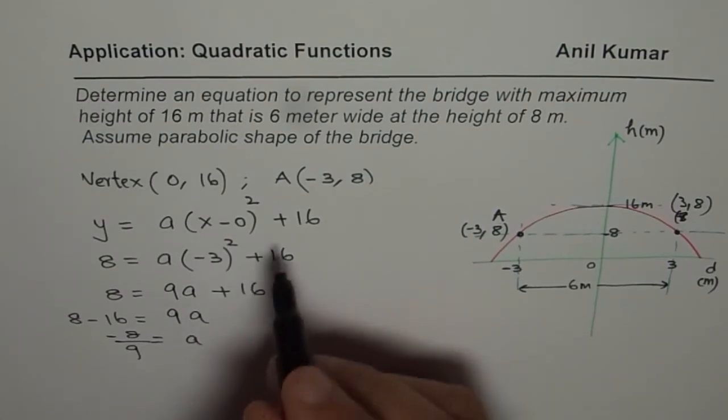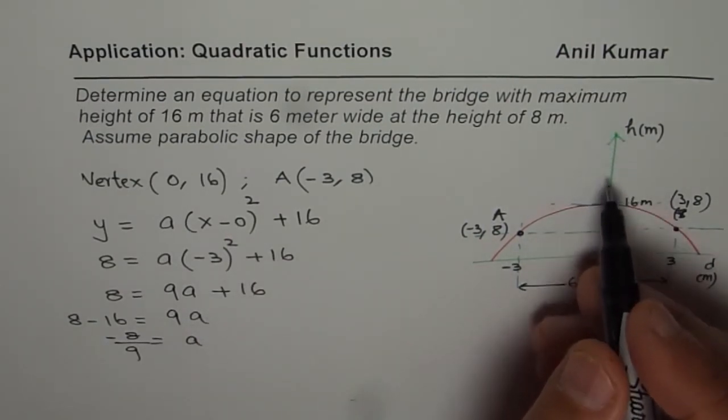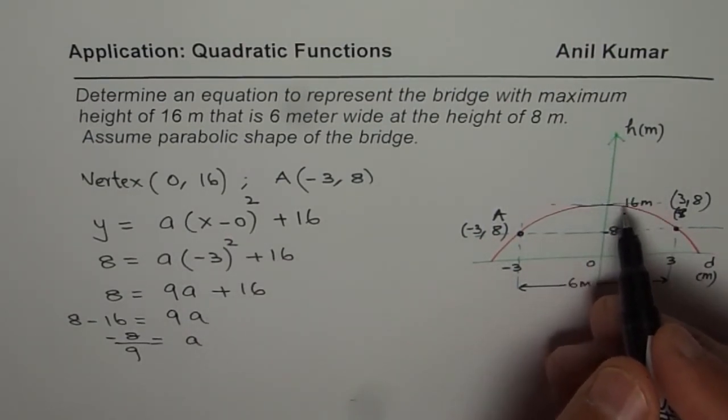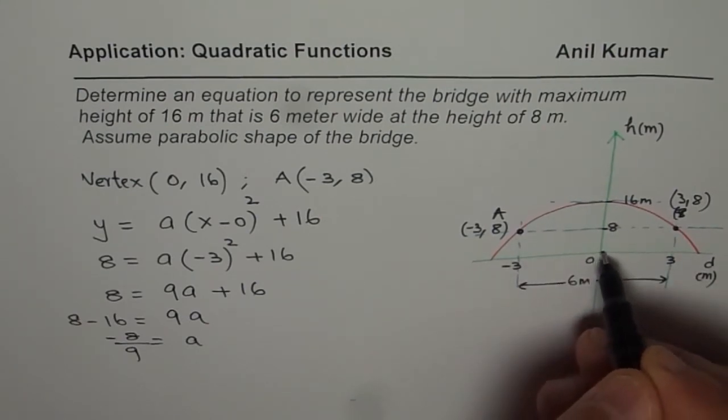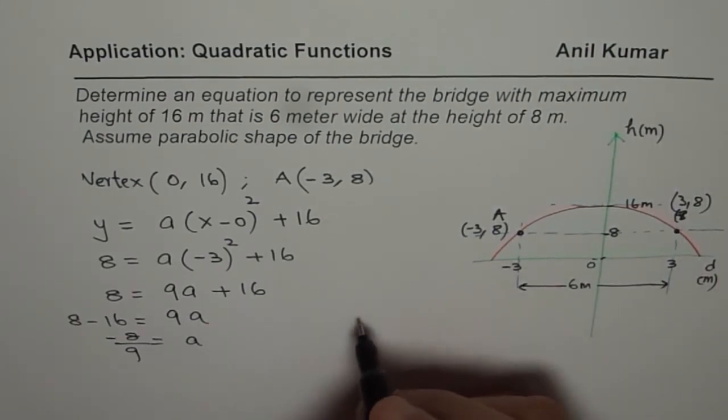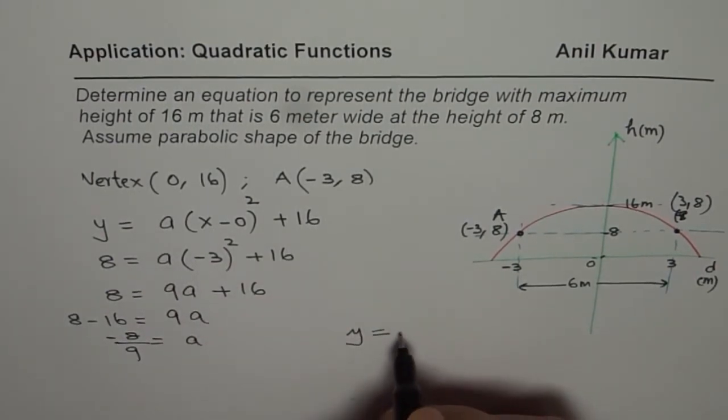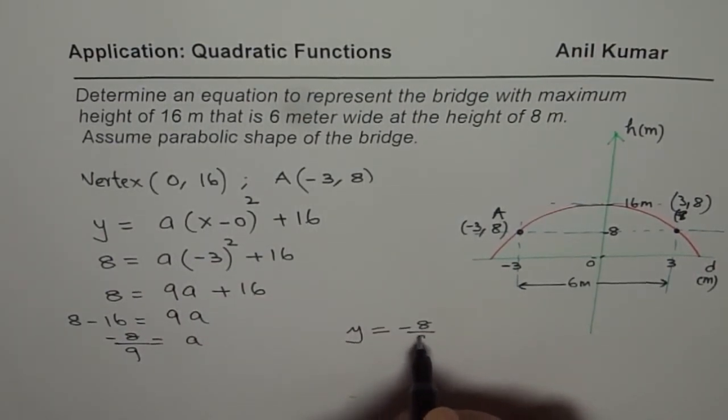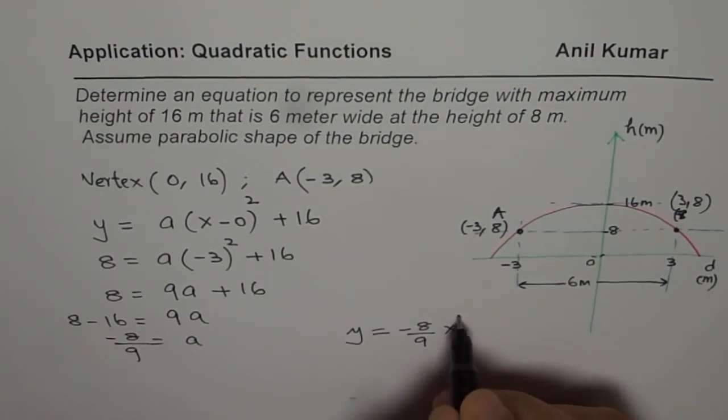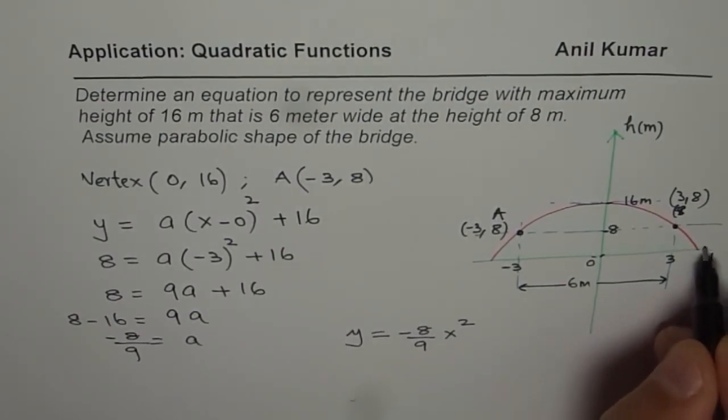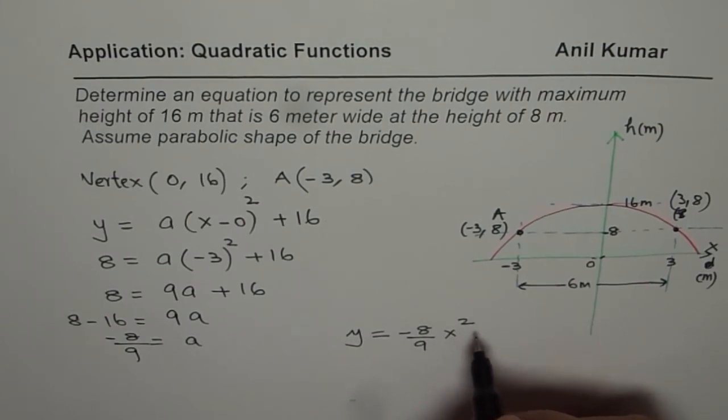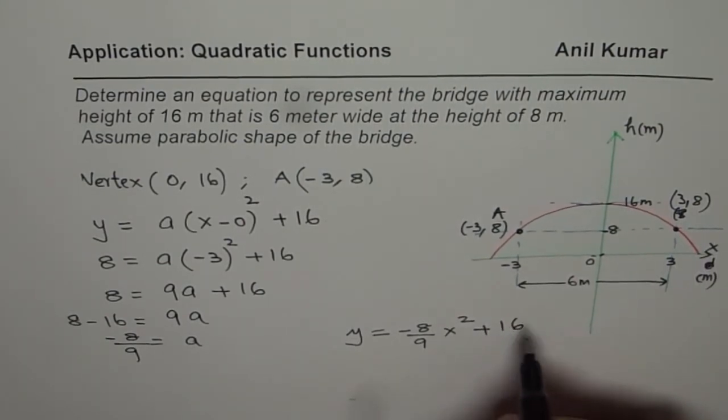We can write our function which represents the height of this bridge as the distance move from this origin as y equals to A x square and A is minus 8 over 9. So minus 8 over 9 x square. So let me write x here since I use the variable x plus 16.